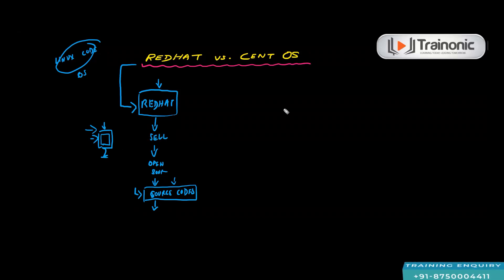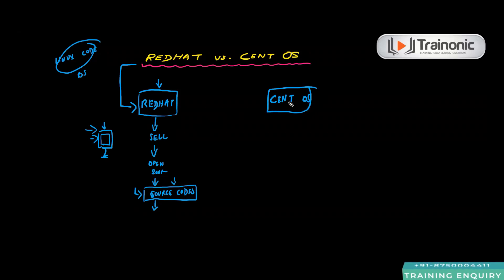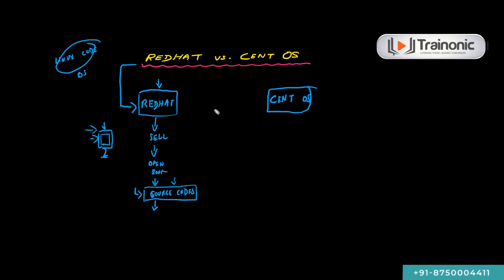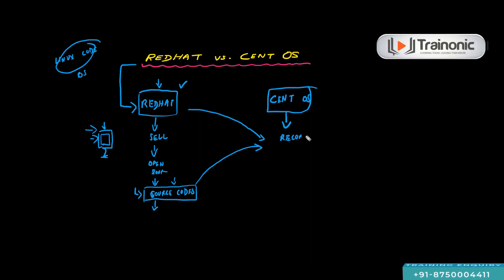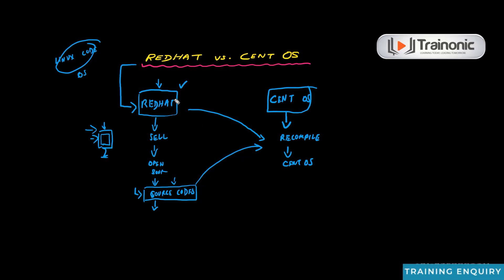On the other hand, there is CentOS, also known as Community Enterprise Operating System. CentOS comes into play after Red Hat. That means Red Hat sells the product and releases all their source code so people can see it freely. The people of CentOS take all that Red Hat source code and recompile it into CentOS,